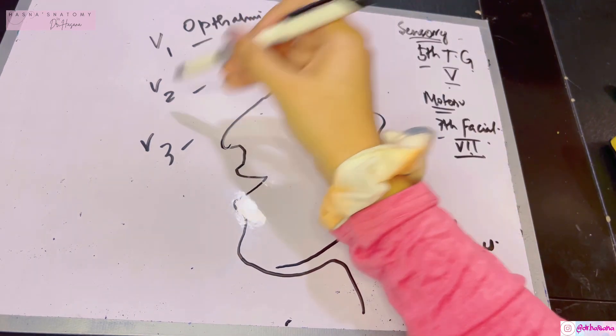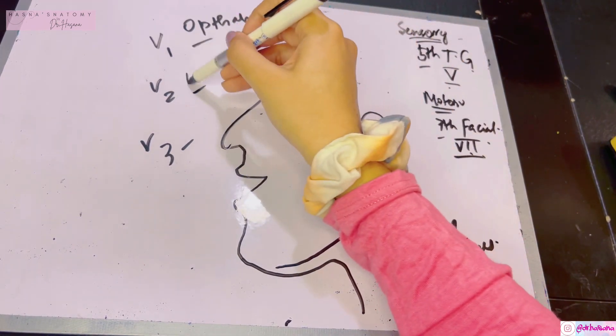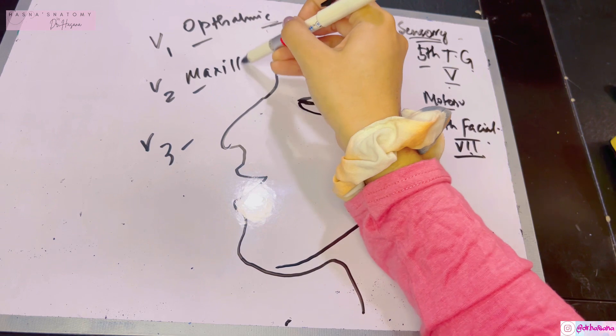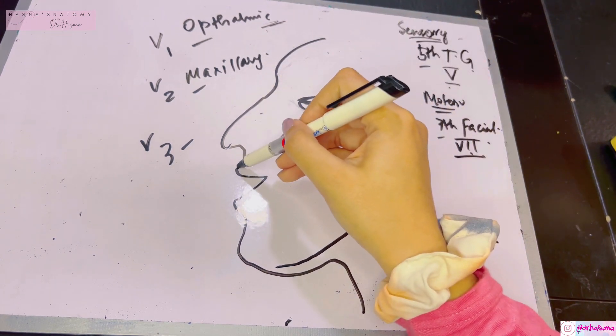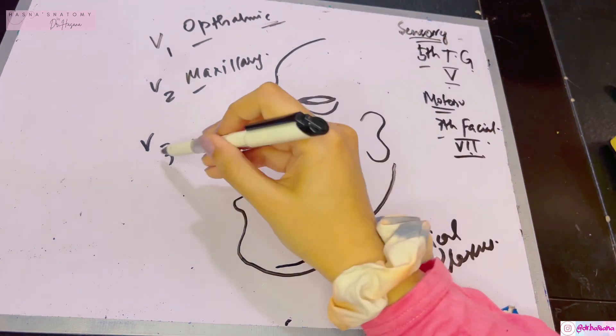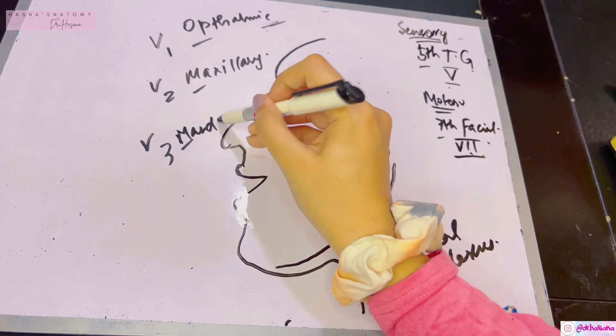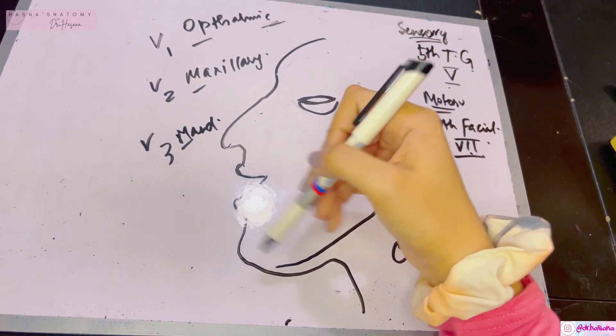V2 is known as the maxillary division. The lower limit of V2 is the upper lip. Finally, the mandibular V3 is going to supply below.